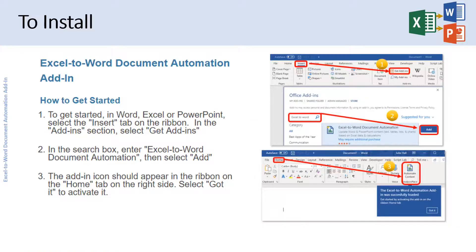The add-in is available in the Office App Store or through the Insert tab of Excel, Word, and PowerPoint. It is a single add-in for all three apps. This add-in requires Microsoft Office, primarily the Office 365 subscription version or Office Online via OneDrive. It must be added to Excel and either Word or PowerPoint.